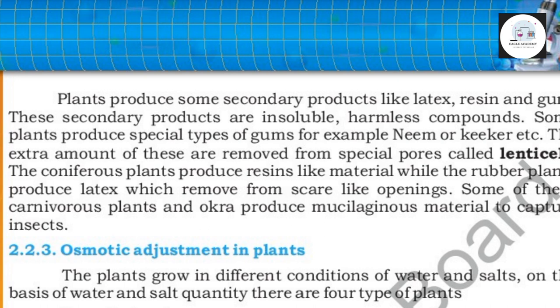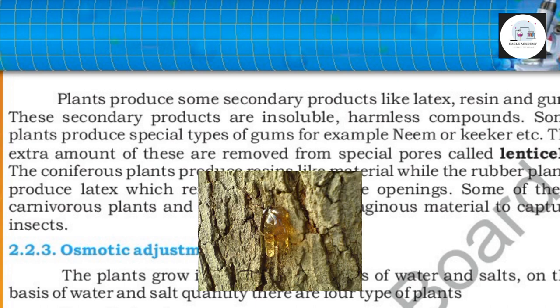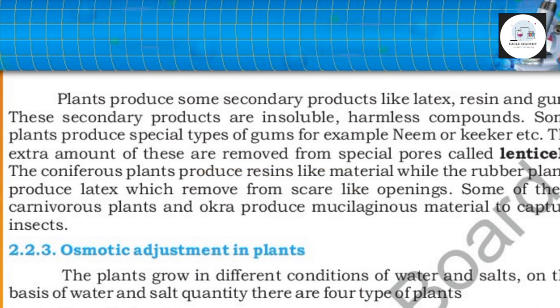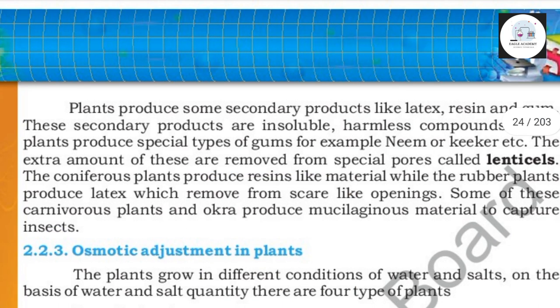These plants produce a special type of gums — for example, neem, sohar, keekar, etc. The extra amount of these secondary products is removed from special pores called lenticels, mostly found on the stem.